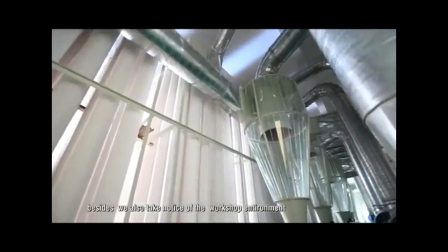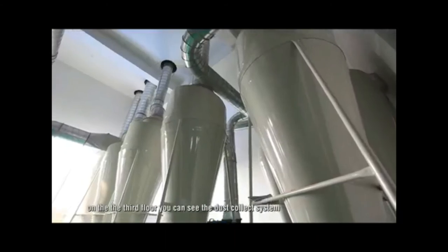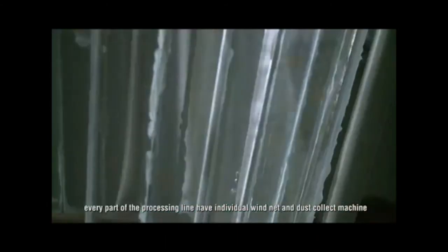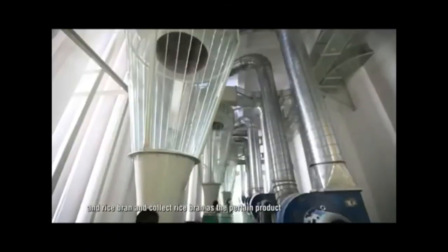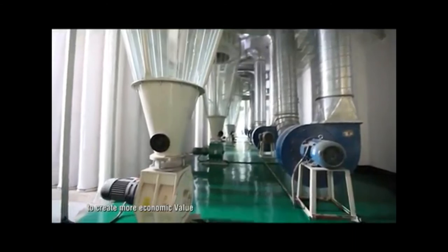Besides, we also take notice of the workshop environment. On the third floor, you can see the dust collection system. Every part of the processing line has individual wind net and dust collection machine. We use the wind net to suck aerial dust and rice bran and collect the rice bran as byproduct to create more economic value.